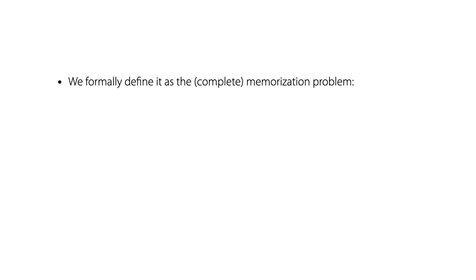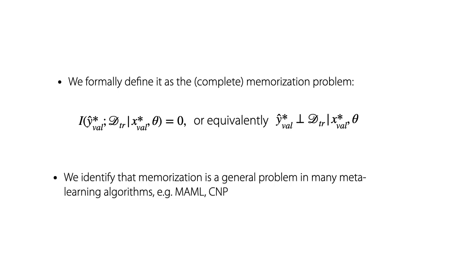We formally define it as a memorization problem, which means the predicted label and the task training data are conditionally independent. We identify that memorization is a general problem in many meta-learning algorithms, for example, model agnostic meta-learning and conditional neural processes.